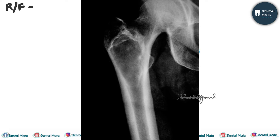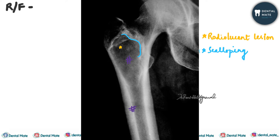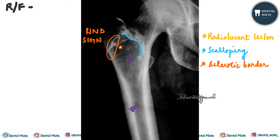Regarding the radiographic features, a radiolucent lesion is seen in the affected bone, along with a destructive lesion in the diaphysis and metaphysis. The normal trabecular pattern is completely lost, resulting in scalloping of the endosteal bone, and there is extreme thickening of the cortex. This thickened sclerotic border with a radiolucent lesion is known as the rind sign — a classical sign of fibrous dysplasia.